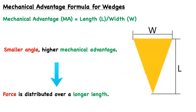By now you've probably come to expect that if we're talking about simple machines, we're going to focus on the mechanical advantage. This is why we're interested in simple machines — they afford a mechanical advantage that reduces effort and makes things easier. For a wedge, the mechanical advantage is given by the length divided by the width.